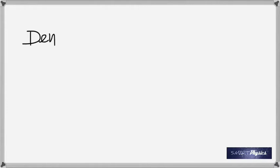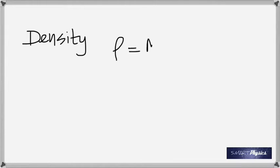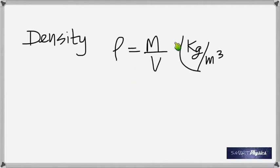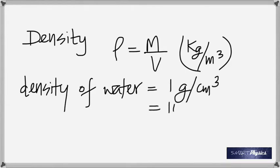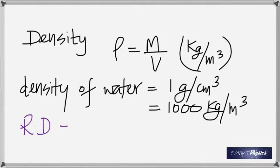The standard for density is water. You might say the density of water is one, which is what you use in chemistry — one gram per centimeter cubed. But that unit is not acceptable in physics. One gram per centimeter cubed translates to 1000 kilogram per meter cubed. So from now on, the density of water is 1000 kg/m³. The symbol for density is rho, and its unit is kilogram per meter cubed.